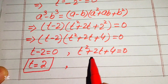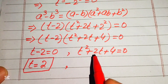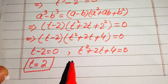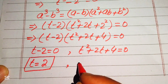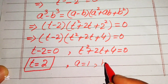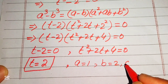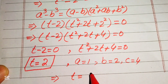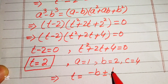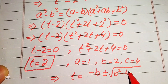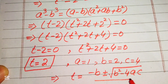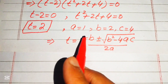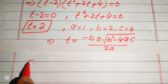To find the other roots, we solve the quadratic equation t squared plus 2t plus 4 equals 0 using the quadratic formula. The coefficients are a equals 1, b equals 2, and c equals 4. The quadratic formula is t equals minus b plus or minus the square root of b squared minus 4ac, divided by 2a.